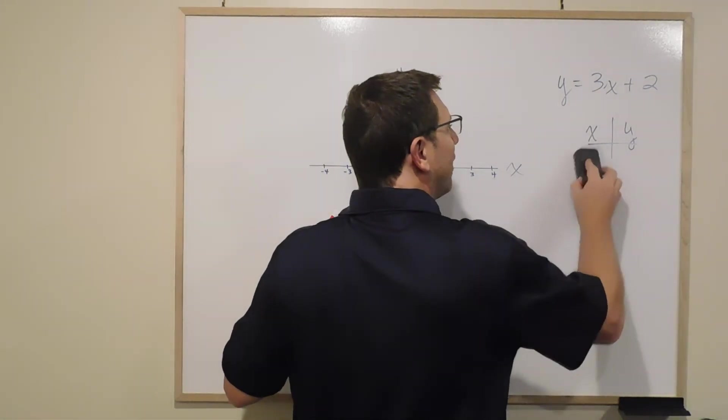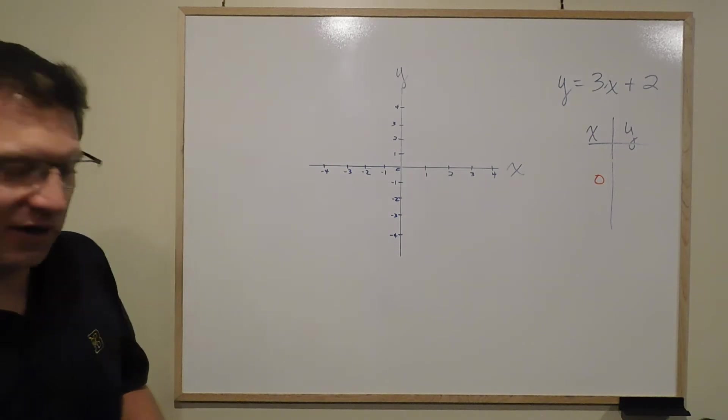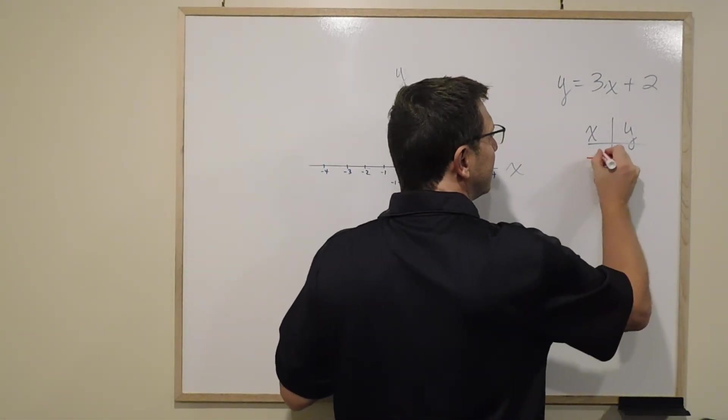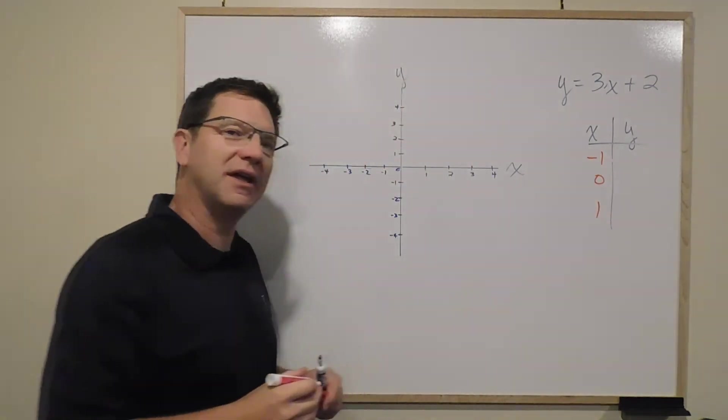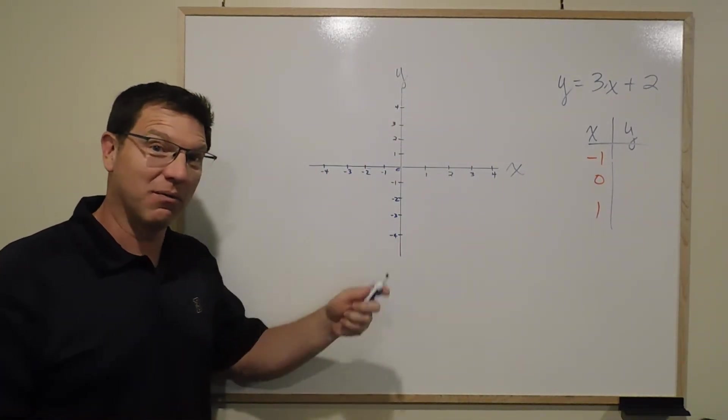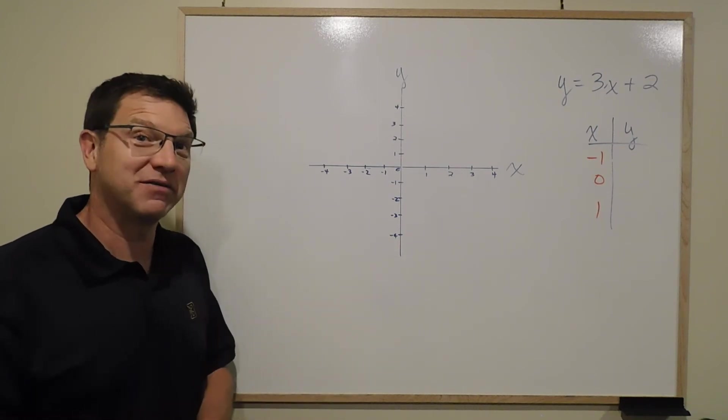That might get a little big because I've only gone to 4 in each direction. Let's try negative 1, 0, and 1. Why I can change my numbers is there's no magic—you pick your x. It's called the independent variable. You pick it, and then you figure out what y is based on what you've picked for x.